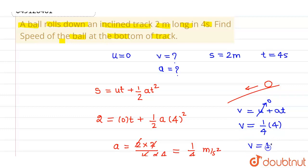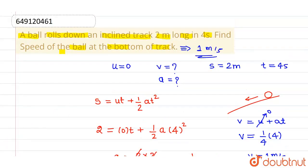Velocity is equal to 1 meter per second. Speed of the ball at bottom of track is coming out to be 1 meter per second. This is our answer. I hope you understood. Thank you.